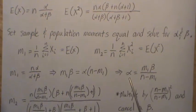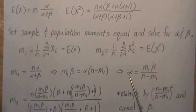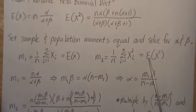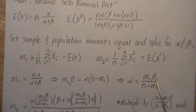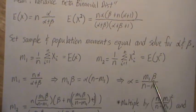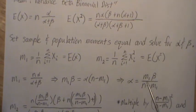And this is an estimate for alpha. Now we have to plug this into the second equation, and then solve for beta. And then once we get that estimate for beta, then we plug it back in this one.